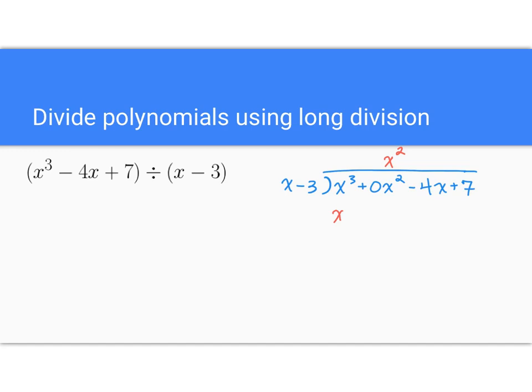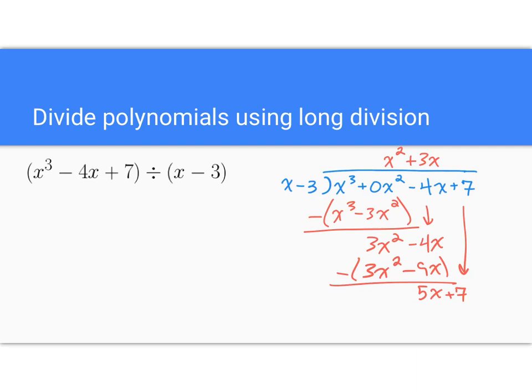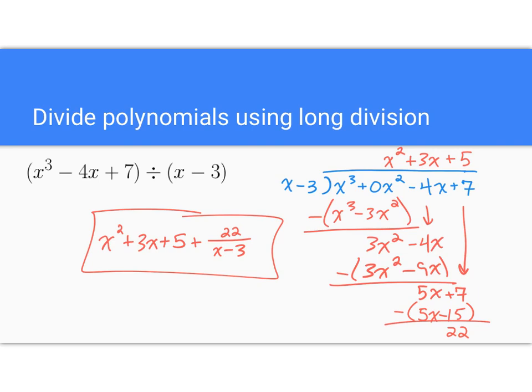What is going to get me an x cubed? If I do x squared and multiply that through, I get x cubed minus 3x squared. Subtract that, I get 3x squared, bring down the minus 4x. What do I multiply by to get a 3x squared? 3x. So I get 3x squared minus 9x. Do that subtraction, we get 5x. Bring down the plus 7. I would have to multiply by 5 to get a 5x minus 15. Do that subtraction, we get 22.